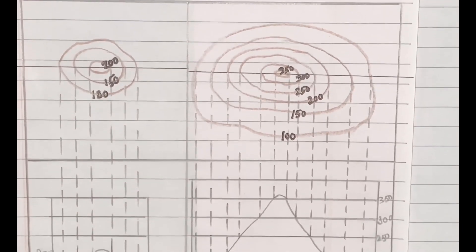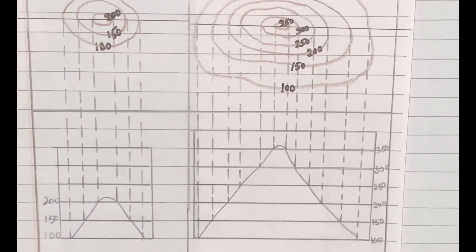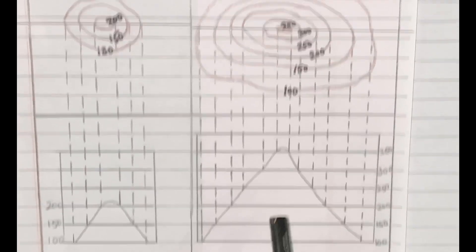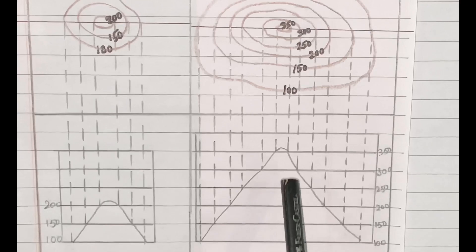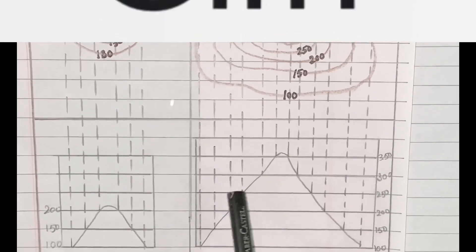This is also clear with the help of the cross section of these two. Here you can see the mountain is taller than a hill. A mountain has a peak and both sides are cliffs.